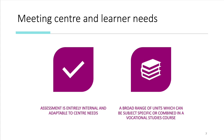The introductory level one does meet centre and learner needs. The assessment is entirely internal and adaptable to your centre's needs. We don't dictate how you assess your units or deliver your course — the assessment is entirely up to you. There's a broad range of units: we have around 120 optional units altogether, which can be subject-specific or combined in a vocational studies course.